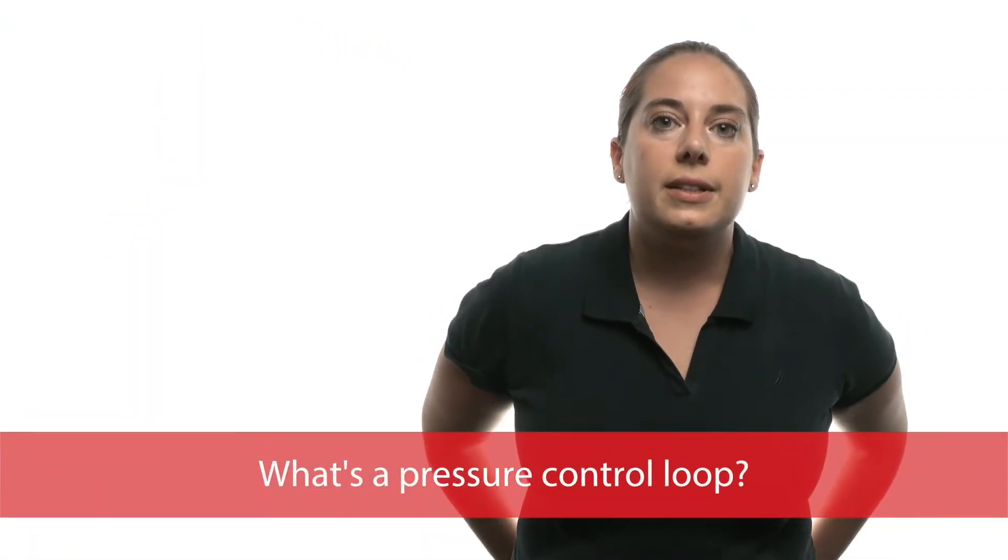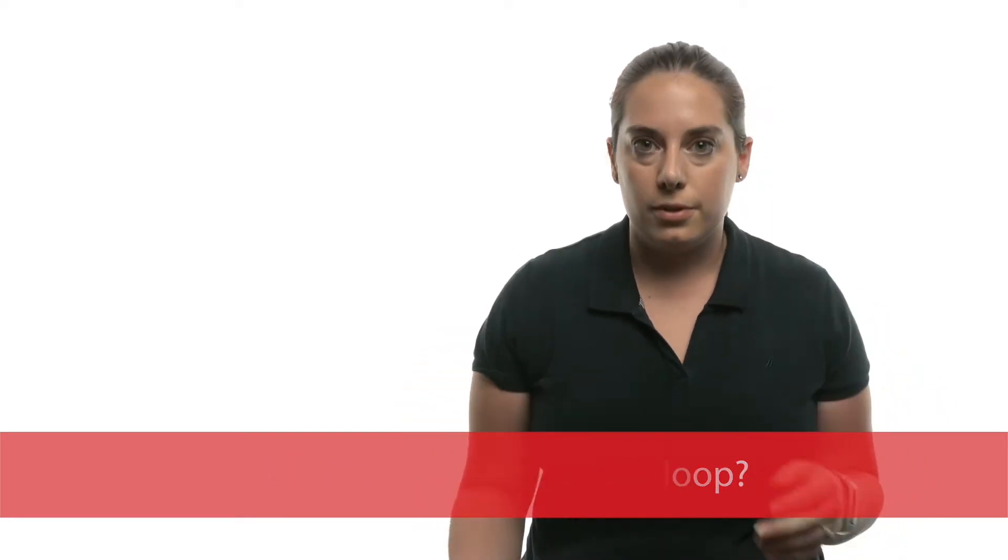So a pressure control loop, the nice thing about our mass flow controllers is that they measure four things. They measure volumetric flow rate, mass flow rate, temperature, and pressure. And you can control on any of those except temperature.